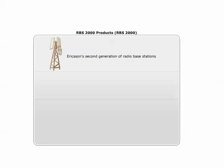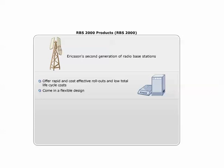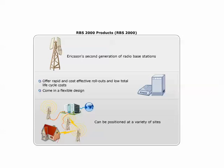RBS-2000 is Ericsson's second generation of radio base stations developed to meet the GSM specification for BTSs. The RBS-2000 product family is specially designed to offer rapid and cost-effective rollouts and low total lifecycle costs. RBS-2000 products come in a flexible design, which means there can be a number of configurations and expansions as the network grows. RBS can be positioned at a variety of sites including outdoor, indoor, on ground or rooftops, and wall-mounted.